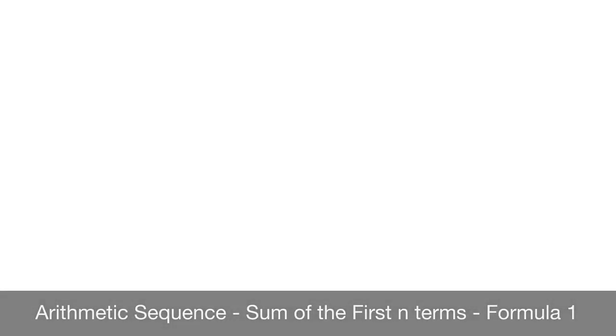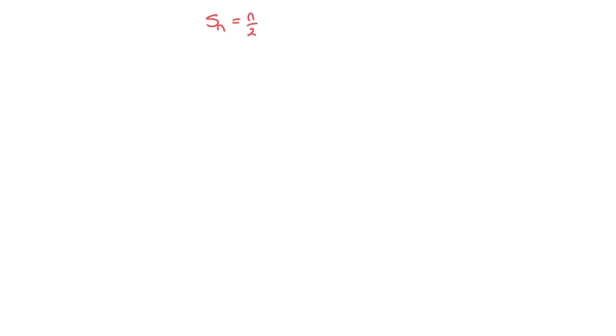We now learn how to calculate the sum of the first n terms of an arithmetic sequence. We're going to learn about this first formula, which is Sn — the sum of the first n terms — equals n over 2 times (u1 plus un), where un is the nth term of the arithmetic sequence. Let's go right ahead and see how this formula works.